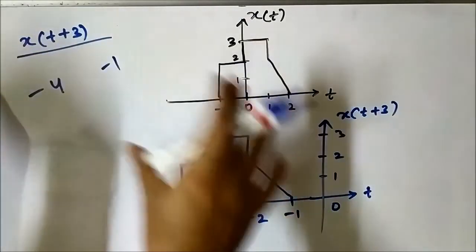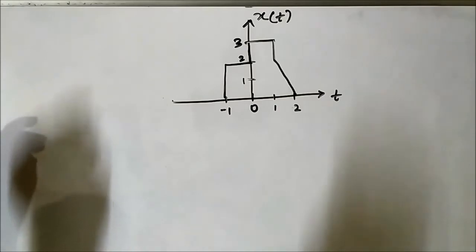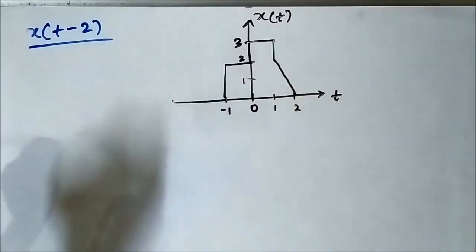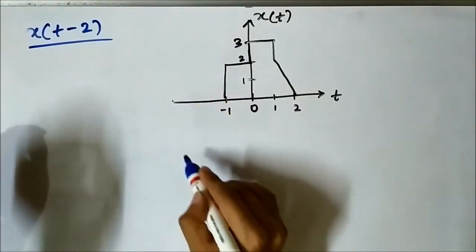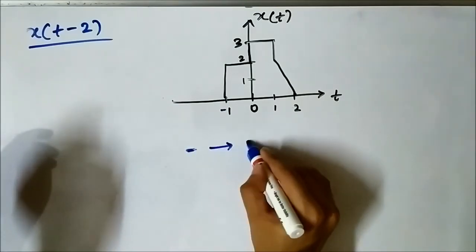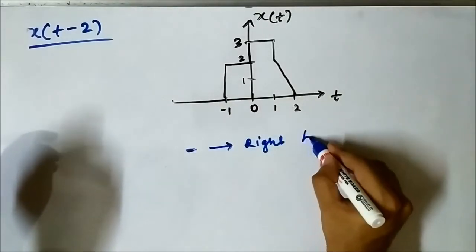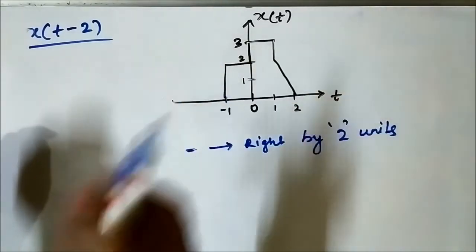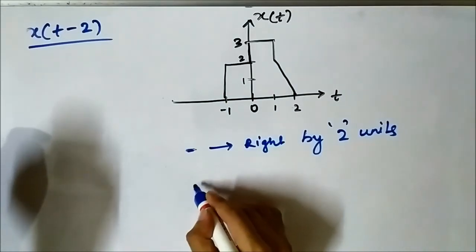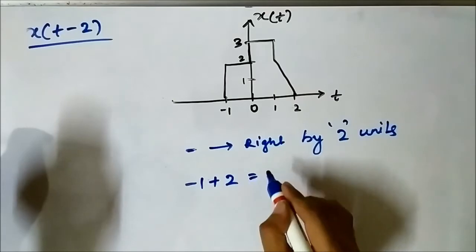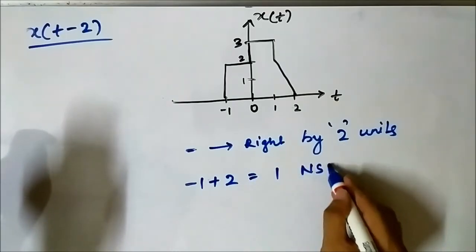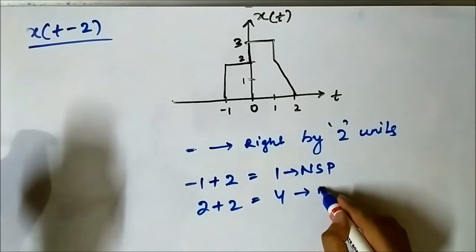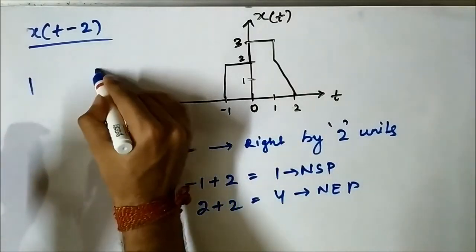Now let us do the shifting in the other direction: XT minus 2. The minus sign means shifting will take place to the right, by 2 units. We pick the starting and ending points of the reference signal — minus 1 and 2 — and add 2 to each. Minus 1 plus 2 equals 1, the new starting point, and 2 plus 2 equals 4, the new ending point. So the new points are 1 and 4.